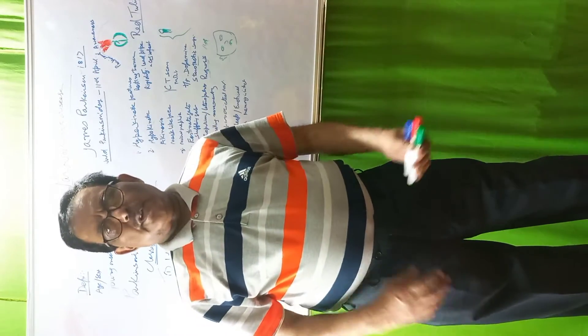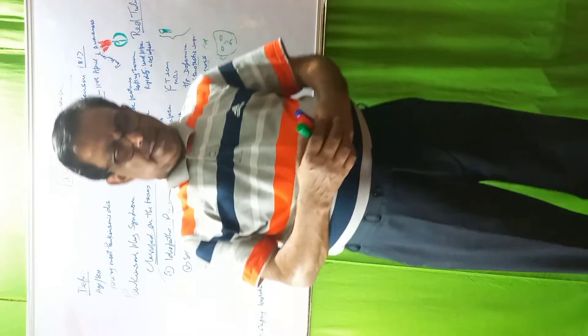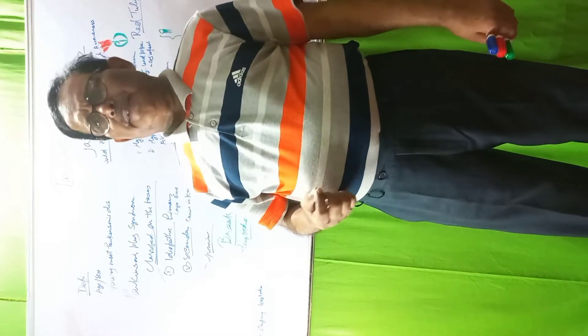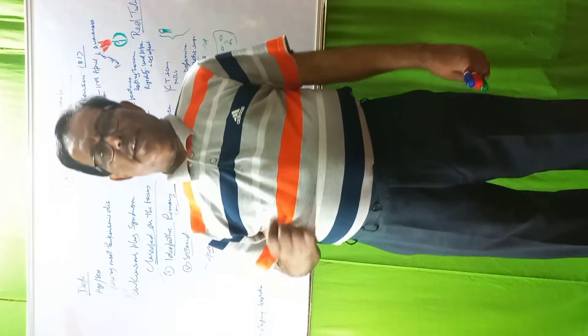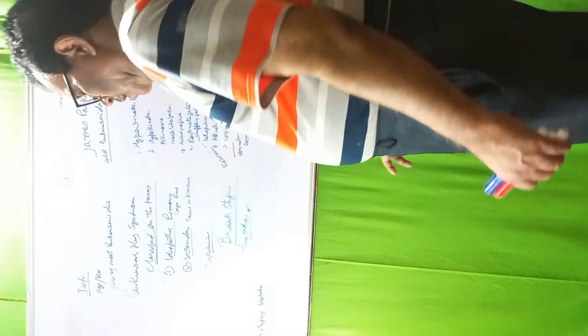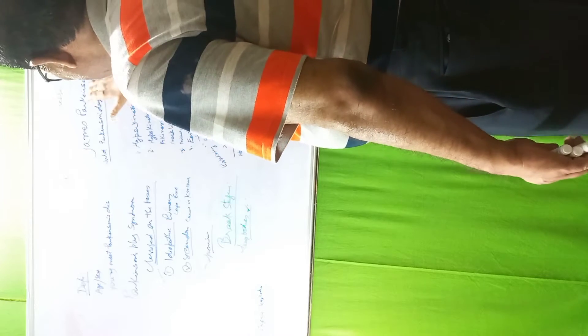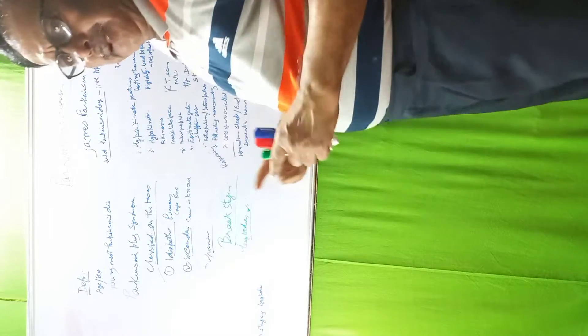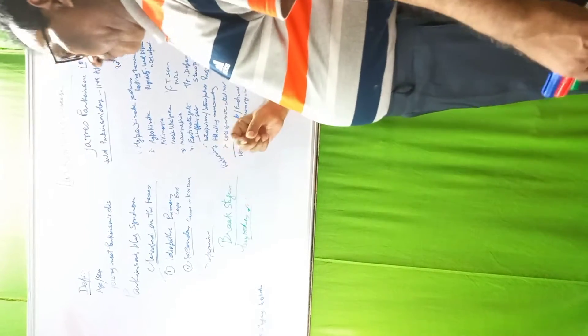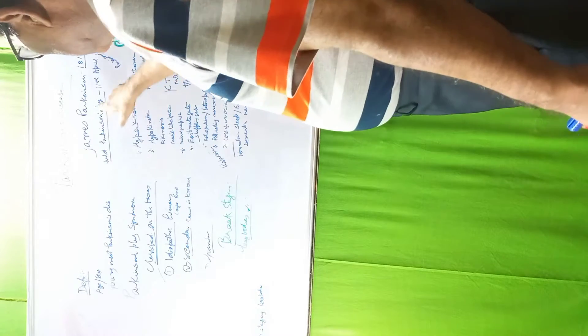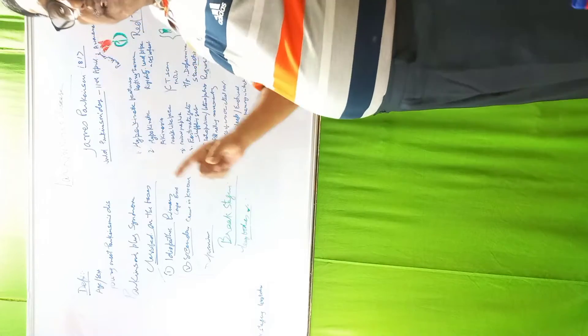Today, I will talk about Parkinson's disease. What is Parkinson's disease? Parkinson's disease is a slowly progressive neurodegenerative disease of insidious onset. This was discovered or described by James Parkinson in 1817. He described the details of Parkinson's disease and to honor him, this disease was known as Parkinson's disease.